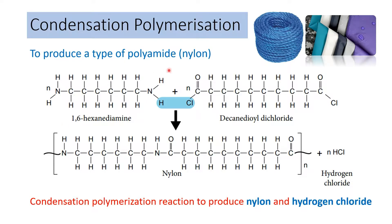Next is polyamide — nylon. Nylon is used for ropes, cloth fabric, and water-resistant materials. In condensation polymerization to produce nylon, 1,6-hexanediamine reacts with decanedioyl dichloride. The hydrogen from the diamine combines with the chlorine from the dichloride to produce hydrogen chloride as the byproduct. To write the product, combine the molecules from both sides at the positions where H and Cl were removed.